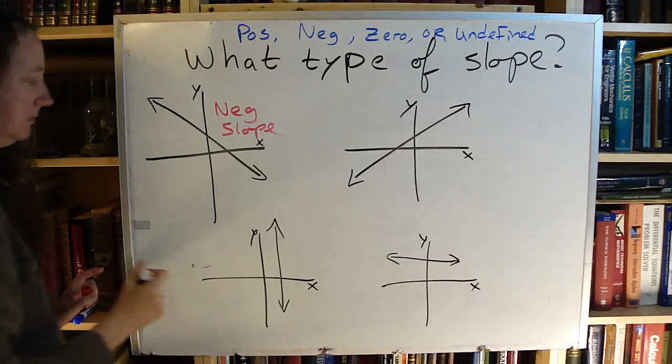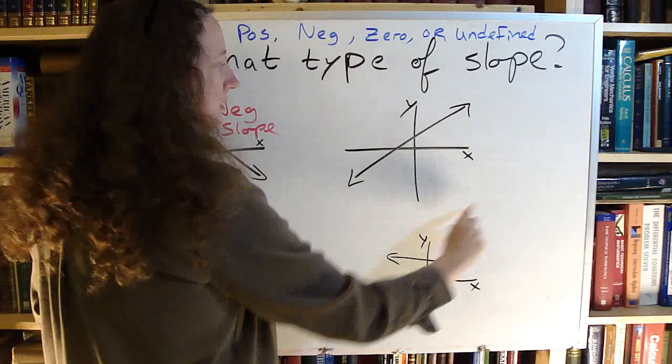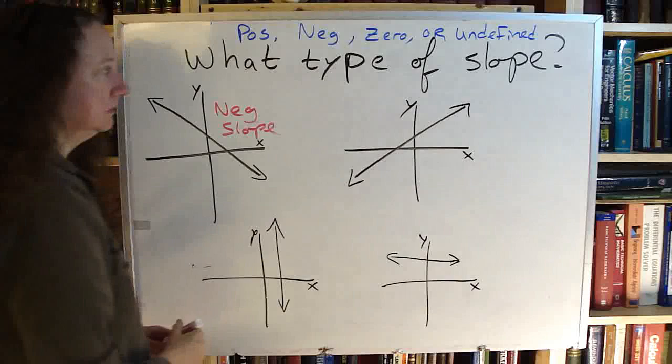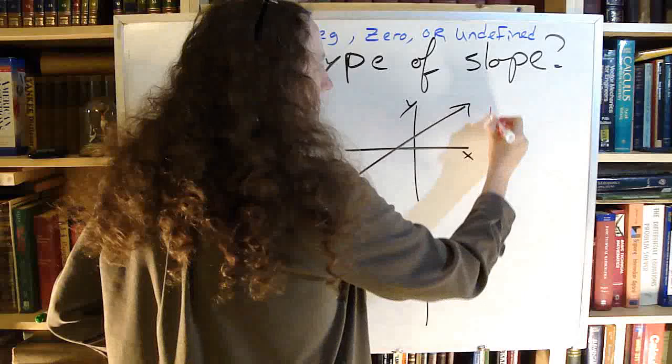As I go from left to right, this line is going up. Up is positive. So this has a positive slope.